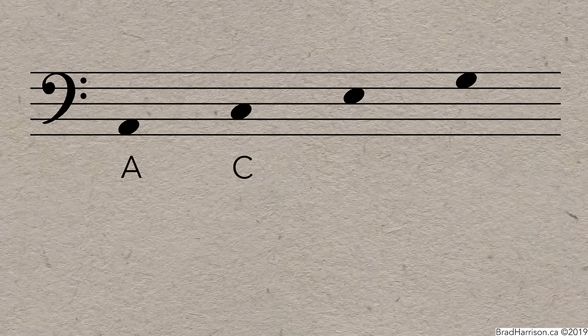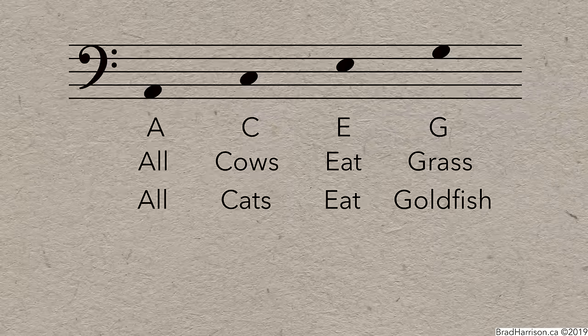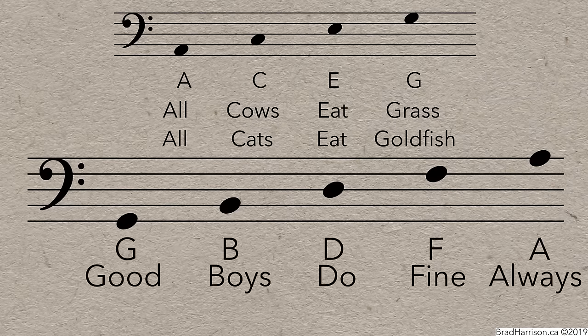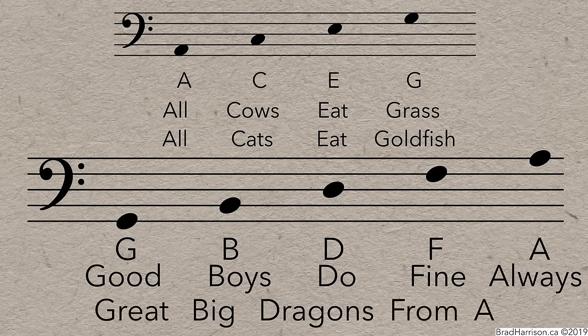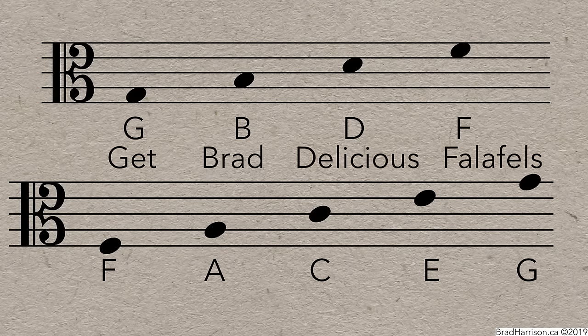For the bass clef, you could use a mnemonic for the spaces like All cows eat grass, or All cats eat goldfish, which they definitely would if given the chance. For the lines, a common option is Good boys do fine always, but if you happen to find Great big dragons from Alberta to be a bit more memorable, that's fine too. Finally, here's a couple of mnemonic options for the alto clef.